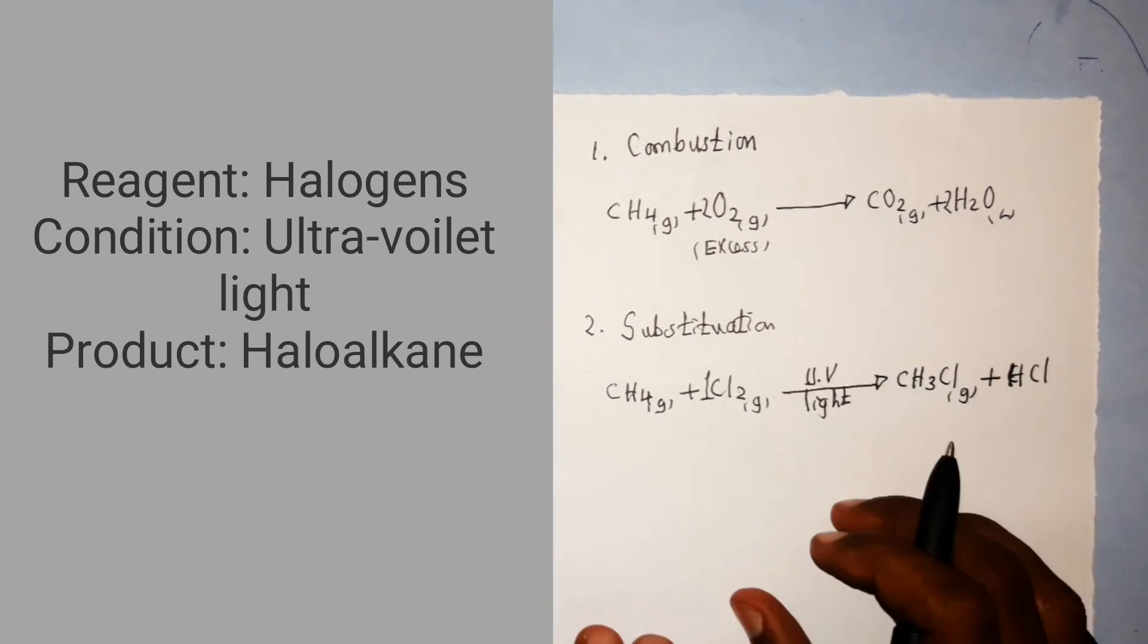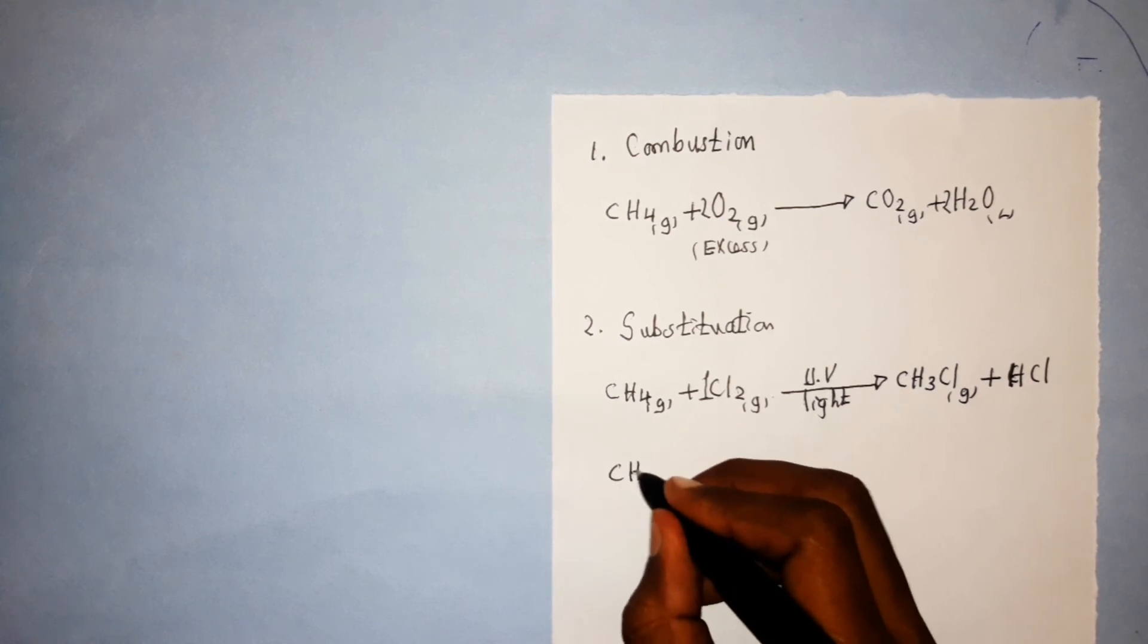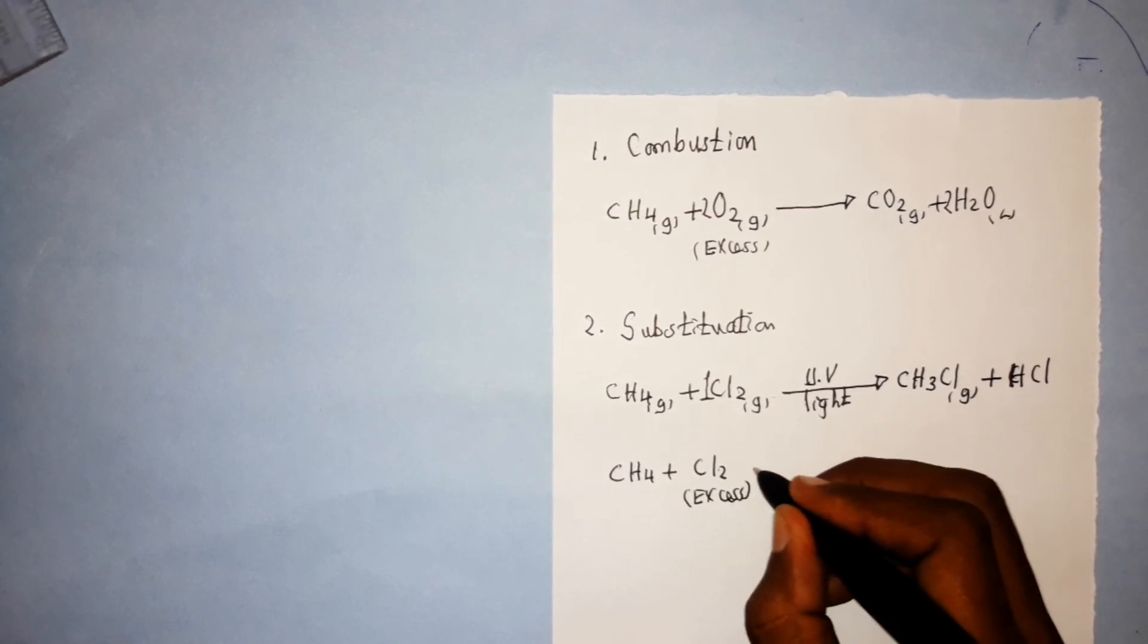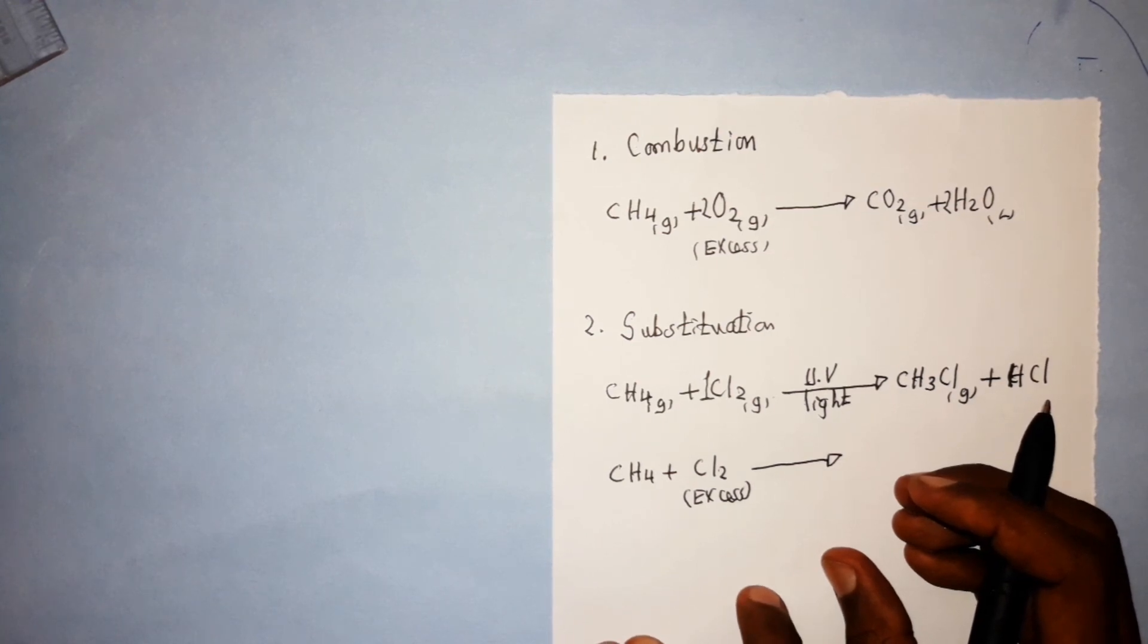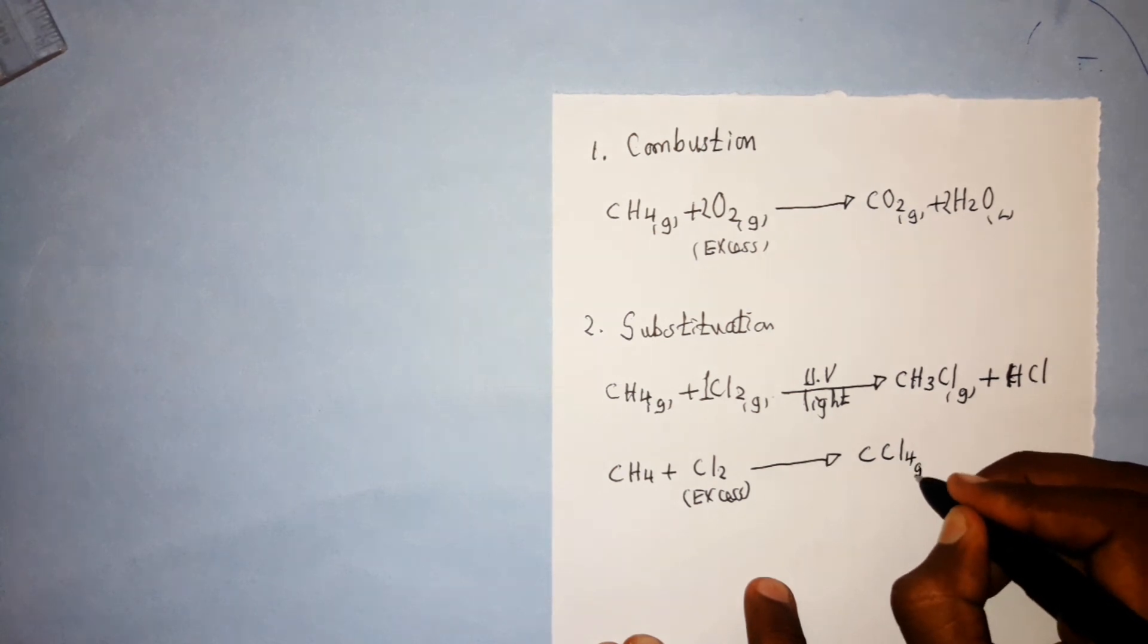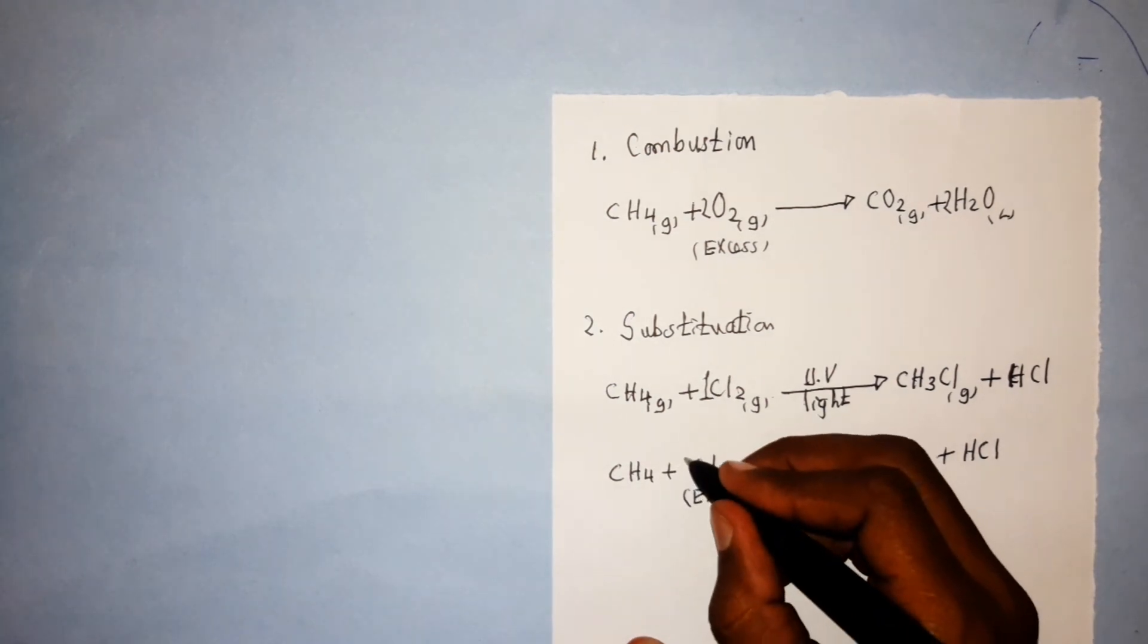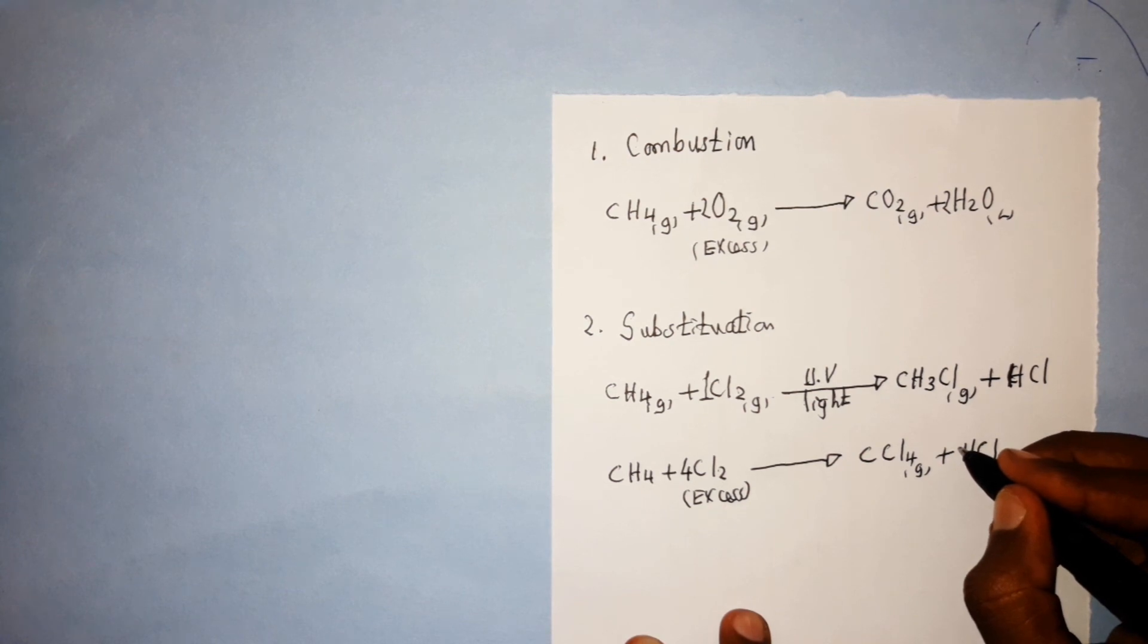If excess moles of chlorine is used, then the reaction will be CH4 plus excess chlorine. This reaction will go on until all the hydrogen atoms in methane are being substituted. So here you will have CCl4 gas plus HCl. And to balance that equation, here it will be 4 and here it will be 4.